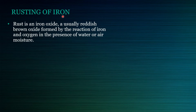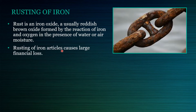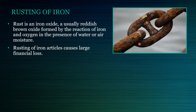First, we will learn about rusting of iron. Rust is an iron oxide — a usually reddish-brown oxide formed by the reaction of iron and oxygen in the presence of water or air. Given sufficient time, any iron mass in the presence of water and oxygen could eventually convert entirely to rust. Rusting is the common term for corrosion of elemental iron and its alloys such as steel. Many other metals undergo similar corrosion, but the resulting oxides are not commonly called rust. Rusting of iron articles causes large financial loss.